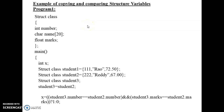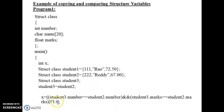Let's take an example program to make it more clear. This is a structure named 'class' with three members: number, name, and marks. There are three structure variables — student one, student two, and student three. Student one and two are initialized, and this copy operation assigns student two's value to student three.